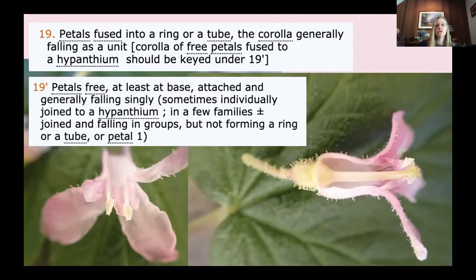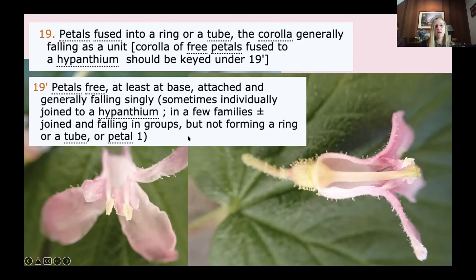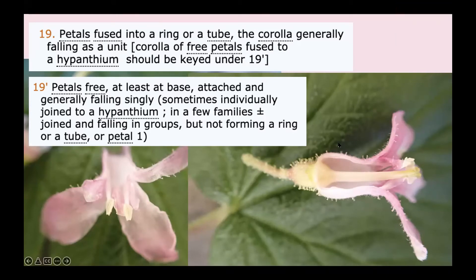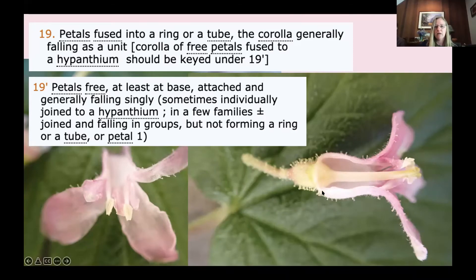Next couplet: petals fused into a ring or a tube, the corolla generally falling as a unit — or petals free, at least at base, attached and generally falling singly, sometimes individually joined to a hypantheum. In this case, are the corollas free or fused? They look fused, and what's happening here is we also have a fusion of the stamens and the petals — we have a hypantheum. The note says corolla of free petals fused to a hypantheum should be keyed under 19 prime, so we will go key under 19 prime.